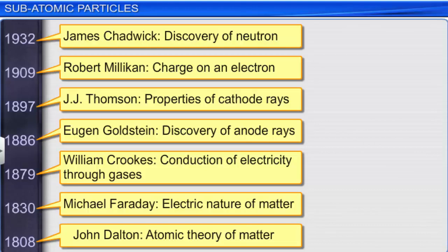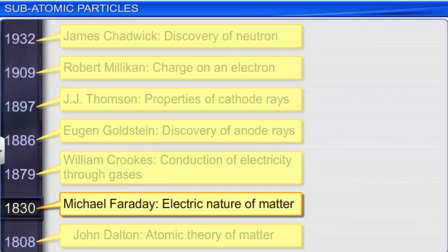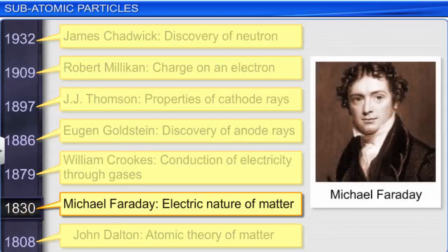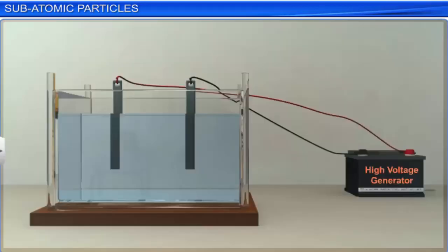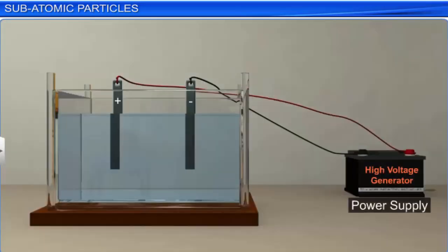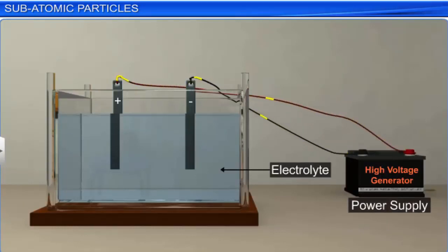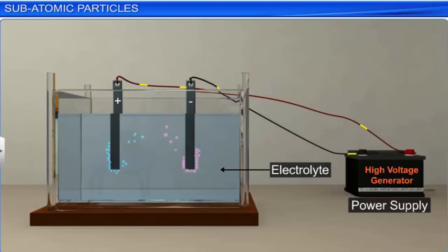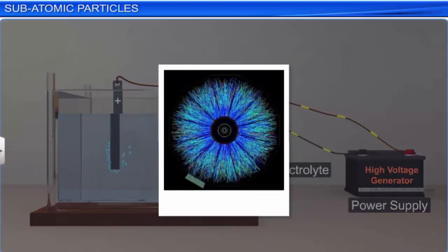For example, it could not explain the electric nature of matter as explained by Michael Faraday through his experiment in 1830. Faraday found that when electricity is passed through an electrolyte — a solution that conducts electricity — chemical reactions resulting in the deposition of matter at the electrodes take place. This experiment proved that electricity consists of charged particles, which indicated the electric nature of matter.